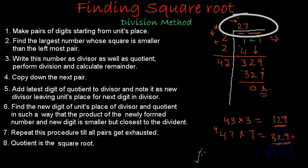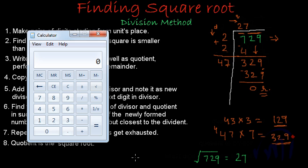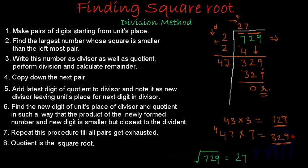That means the square root of 729 is equal to 27. You can verify this by multiplying 27 by 27. Using the calculator: 27 multiplied by 27 gives 729. So the square root of 729 is confirmed to be 27. This is the division method of finding the square root.